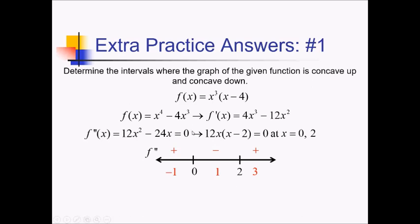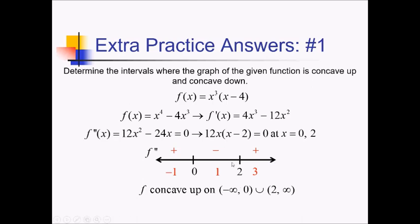Since I have a positive in the first and third intervals, that means that f is going to be concave up from negative infinity to 0, and also from 2 to positive infinity. And since f double prime is negative between 0 and 2, f is going to be concave down on that interval.